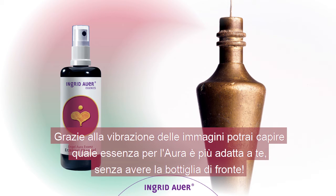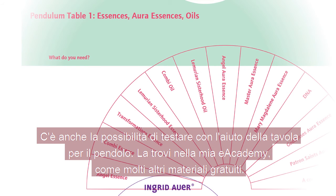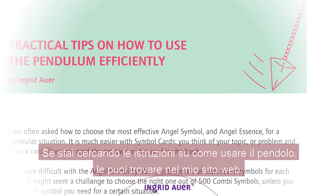Through the vibration of the pictures you can actually test which aura essence is the right one for you, without having the bottles in front of you. There is also the possibility to test with the help of the pendulum tables. As with a lot of other free material, you can find them in my e-academy. If you are looking for free pendulum instructions, you can find them on my website.